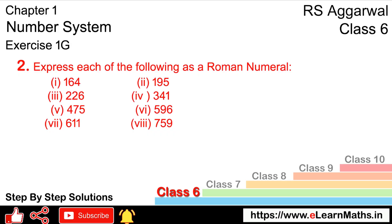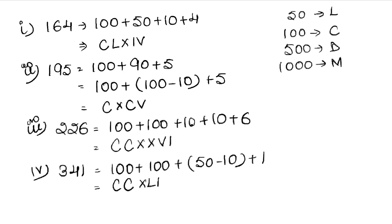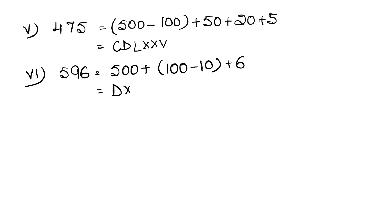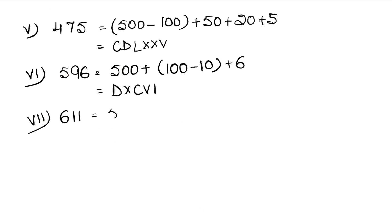In the sixth part we have 596, written as 500 plus 90 plus 6. 500 is D, 90 is XC (100 minus 10), and 6 is VI. So the answer is DXCVI. In the seventh part we have 611, written as 500 plus 100 plus 10 plus 1. 500 is D, 100 is C, 10 is X, and 1 is I. The answer is DCXI.